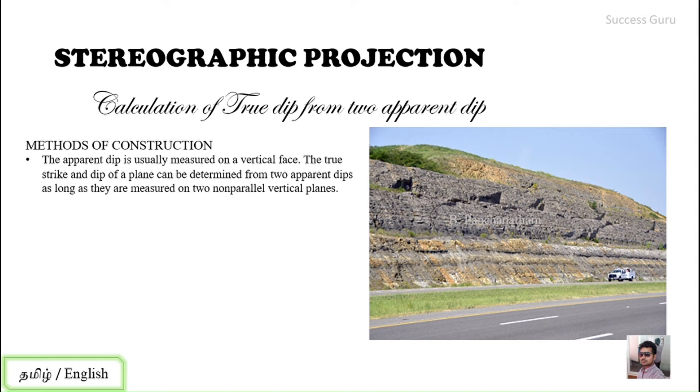In dealing with the calculation of true dip, as you know, the apparent dip is usually measured on a vertical face. The true strike and dip of a plane can be determined from two apparent dips as long as they are measured on two non-parallel vertical planes.